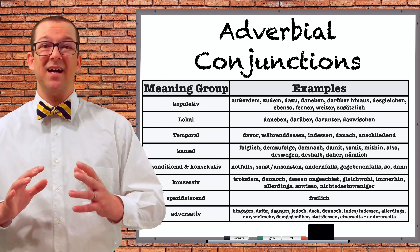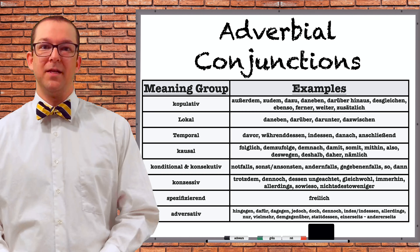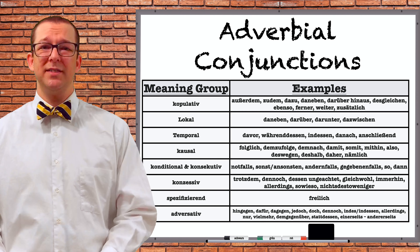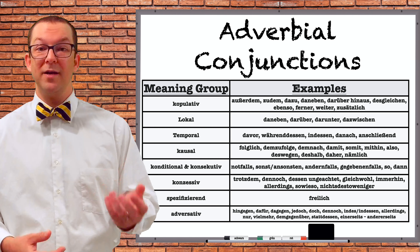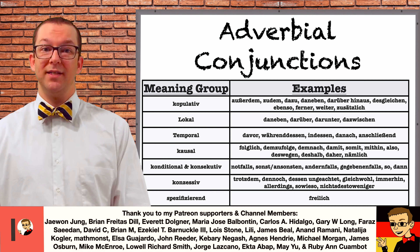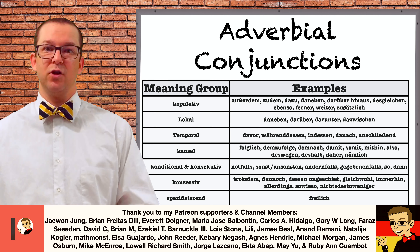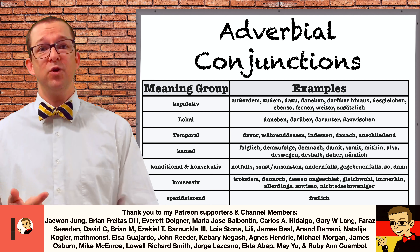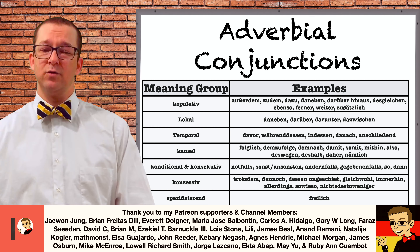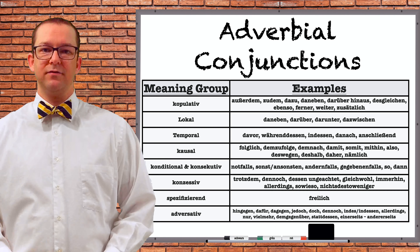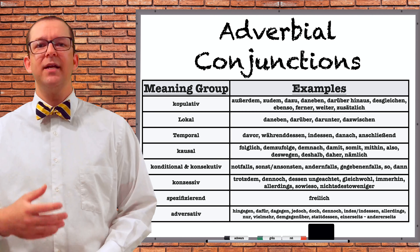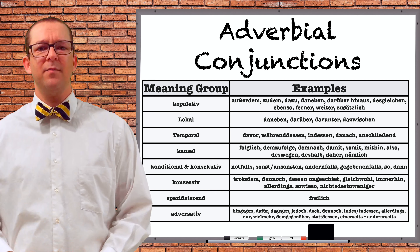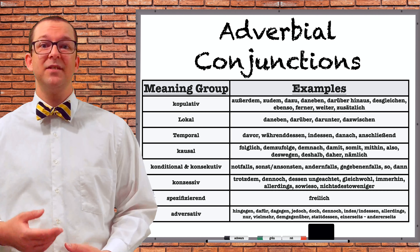These are nowhere near the entire list of adverbial conjunctions in German — there are more than 50 of them. In this chart, you can see a list of different adverbs that can be used as conjunctions, separated based on their use. Kopulativ refers to something that adds to the first clause — this is why außerdem is in that group. Other examples include weiter (furthermore), ebenso (equally or as well as), and darüber hinaus (beyond that). Lokal refers to location — daneben, for example, means next to that. You'll notice that all of them on this list are da-compounds.